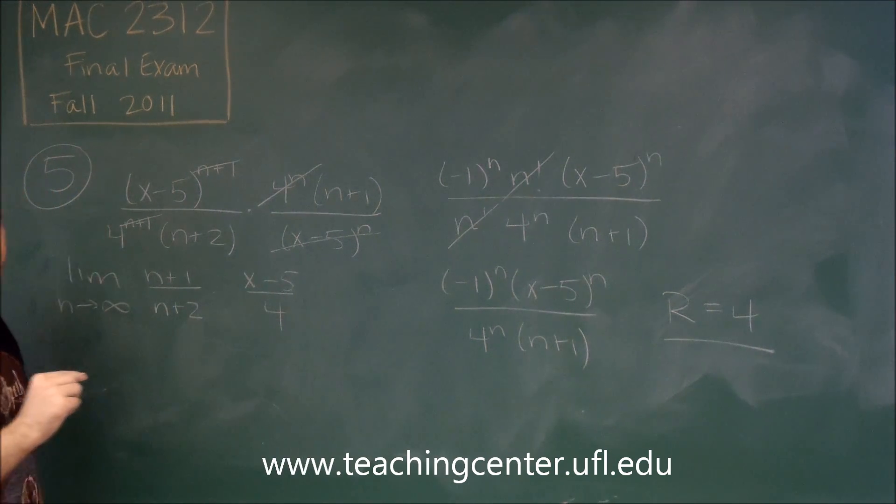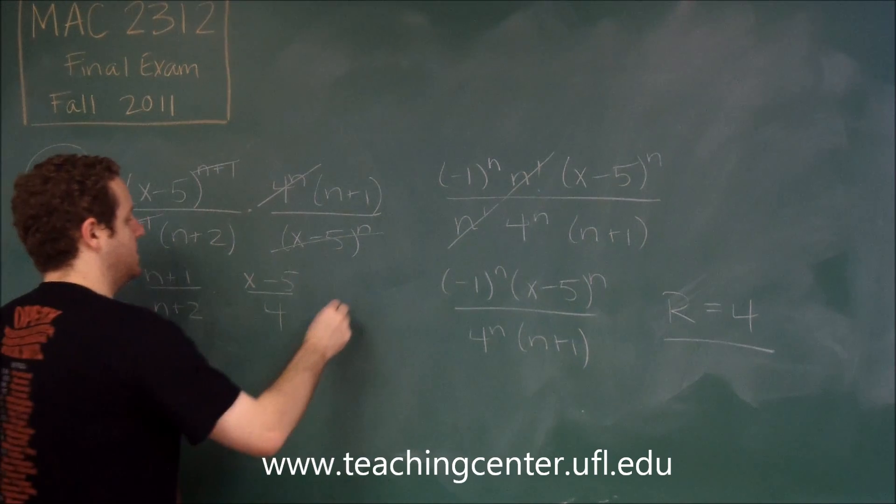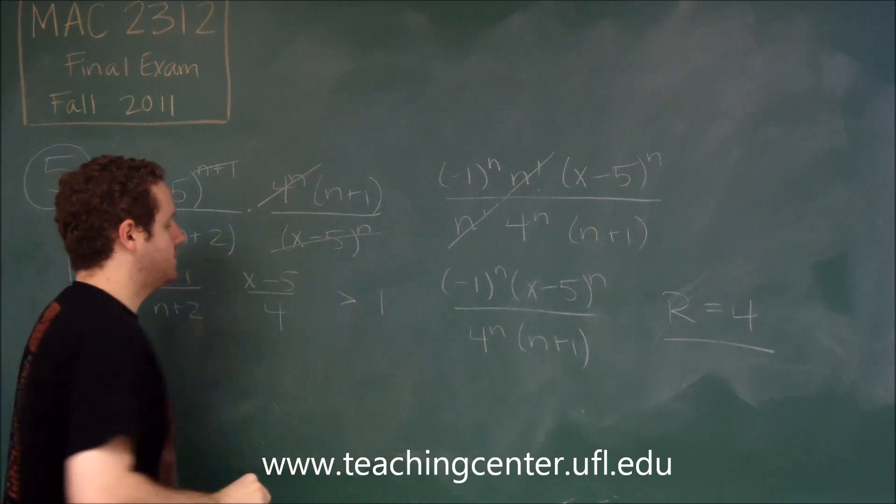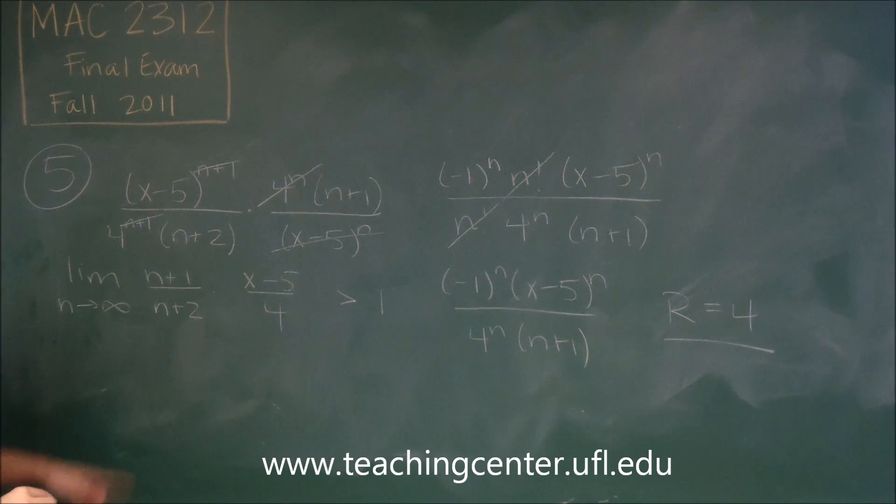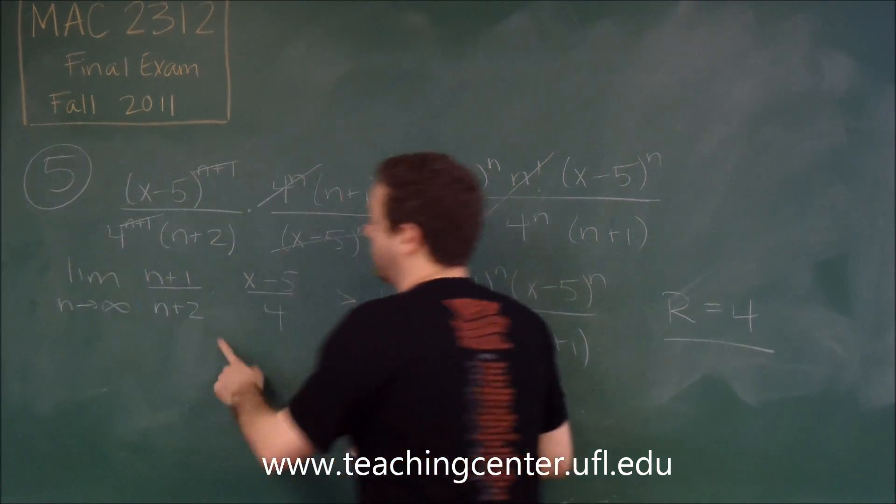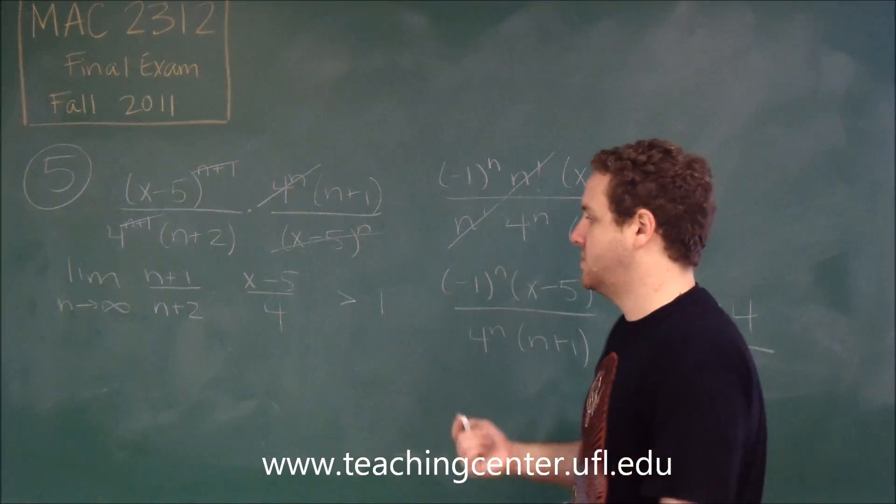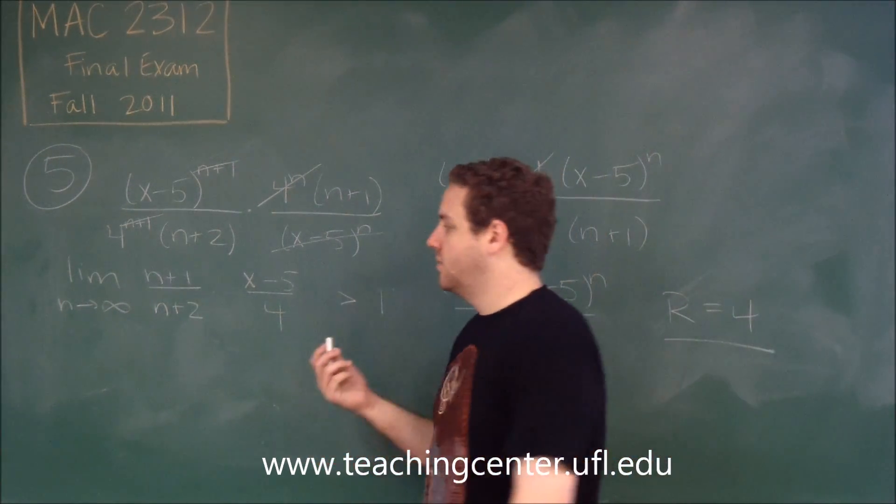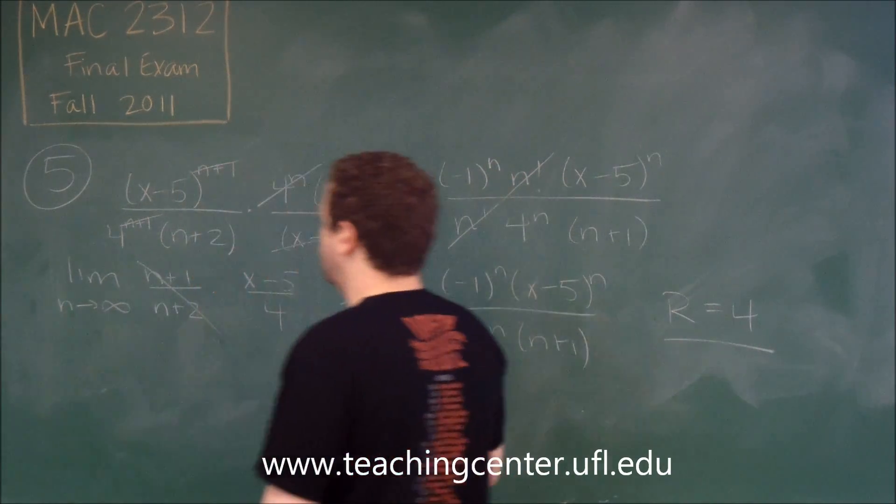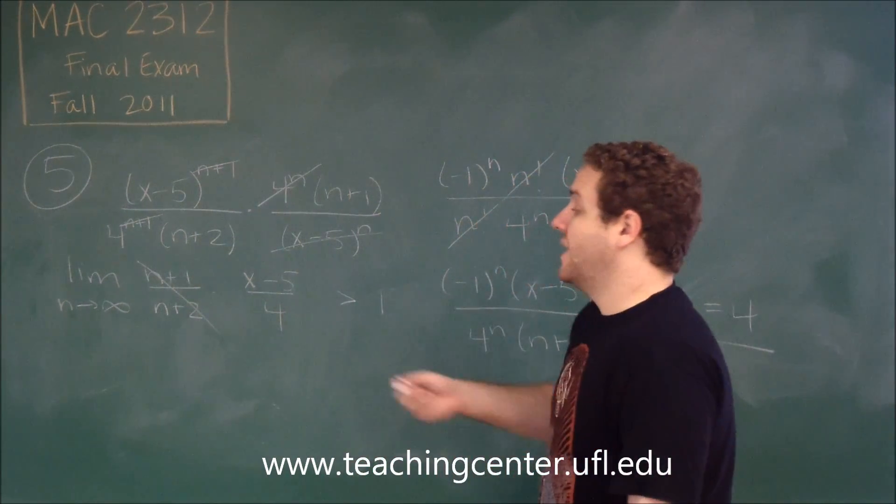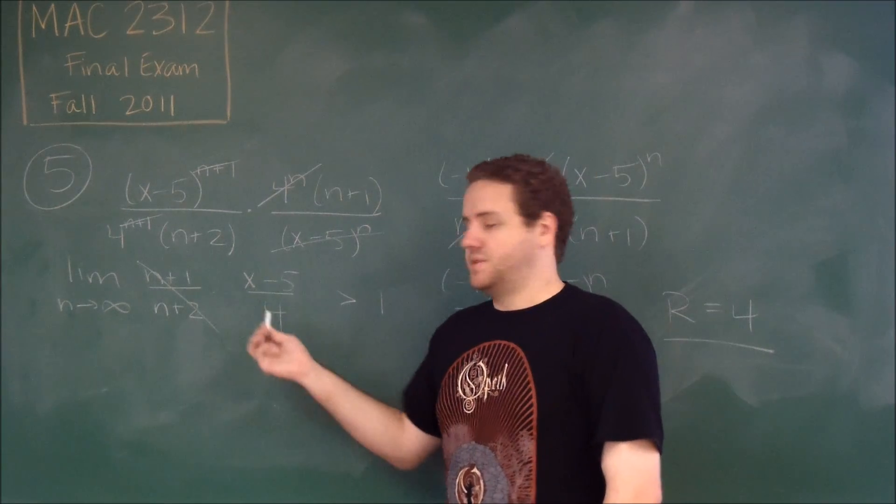And if we want this to converge, we want this to be less than 1. So as n goes to infinity, n plus 1 over n plus 2 is just 1, because those are the same degree rational function. So we get 1 times x minus 5 over 4, which is just that.